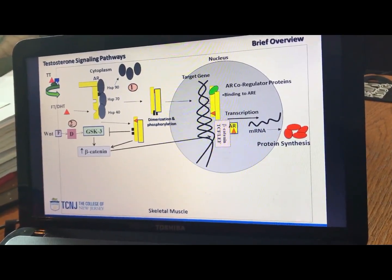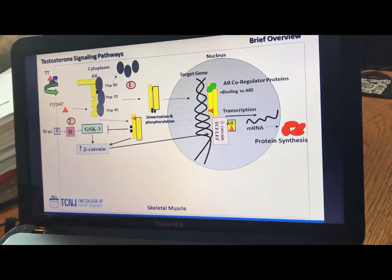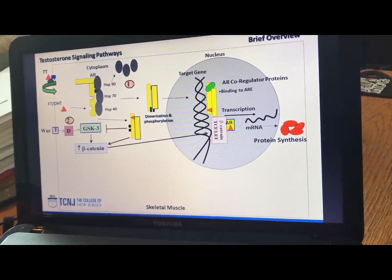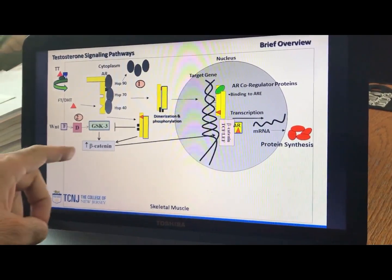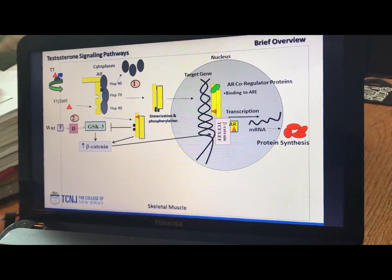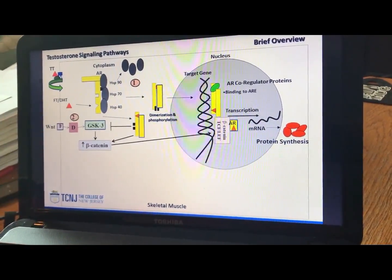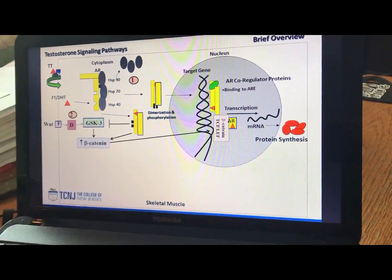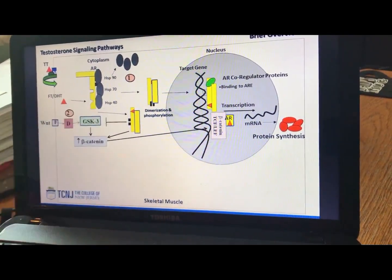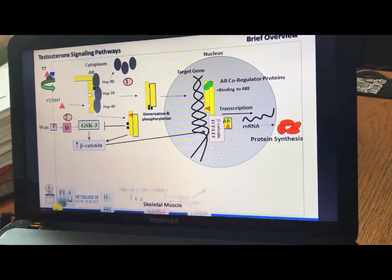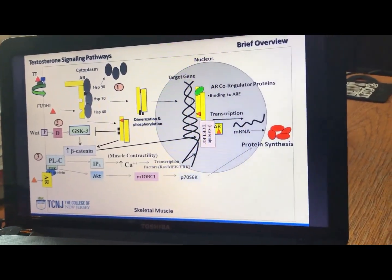But also, beta-catenin is an anabolic intracellular signaling molecule. It needs to bind to proteins that actually have a sequence that can help it bind, so to speak. And the androgen receptor complex can do that as well. So it can positively influence that pathway in a couple of different ways, okay? Now, pathway number three, here we're looking at the non-genomic.